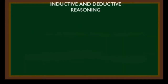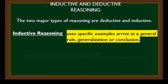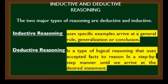Now let's proceed to inductive and deductive reasoning. The two major types of reasoning are deductive and inductive. Inductive reasoning uses specific examples to arrive at a general rule, generalization, or conclusion. Deductive reasoning is a type of logical reasoning that uses accepted facts to reason in a step-by-step manner until we arrive at the desired statement.